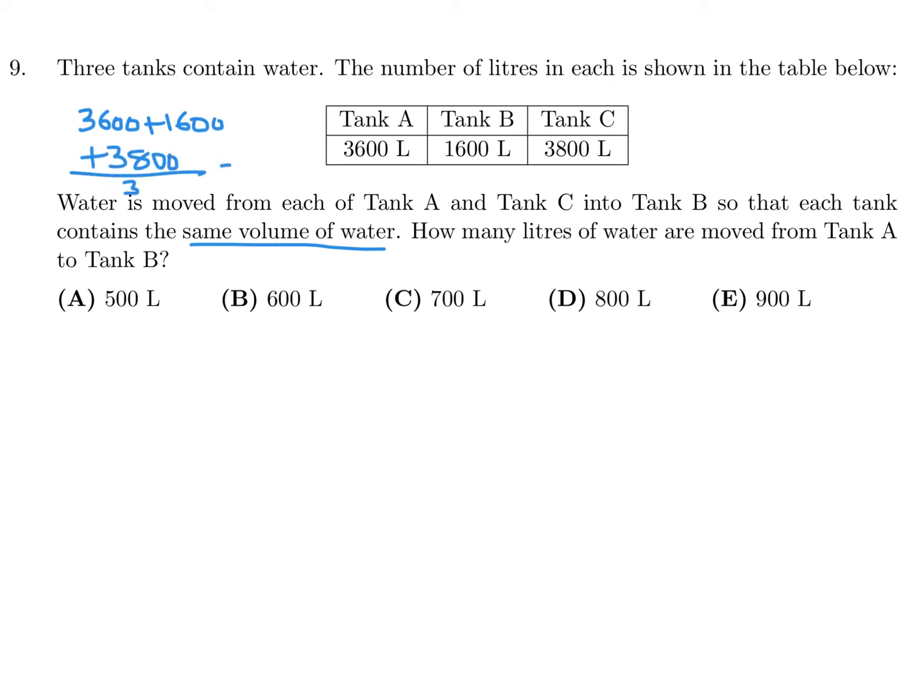How does that happen? You have to give 600 from A to B, and bring 800 from C to B. The question asks how many liters are moved from tank A to tank B, and that's just 600. Number 9, the answer is B.